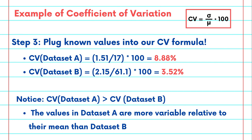Well, what does this mean? Dataset A has a higher coefficient of variation at 8.88% compared to Dataset B at 3.52%, which indicates that the temperature values in Dataset A are more variable relative to their mean compared to Dataset B.